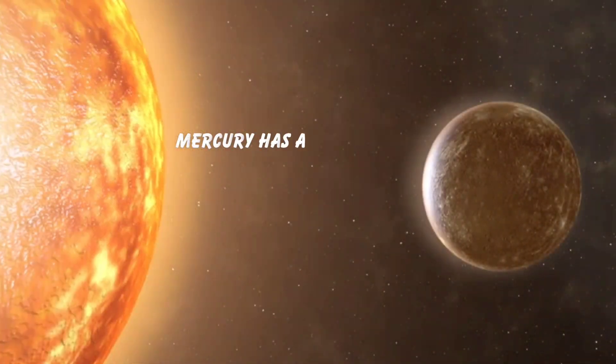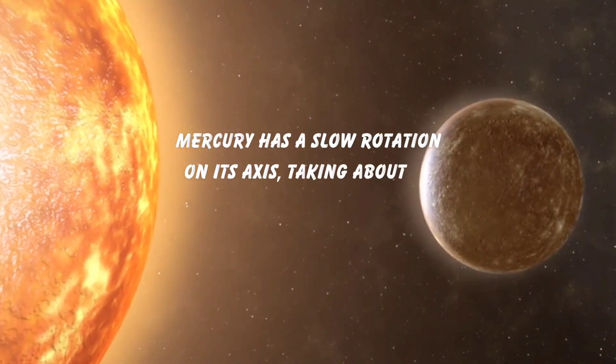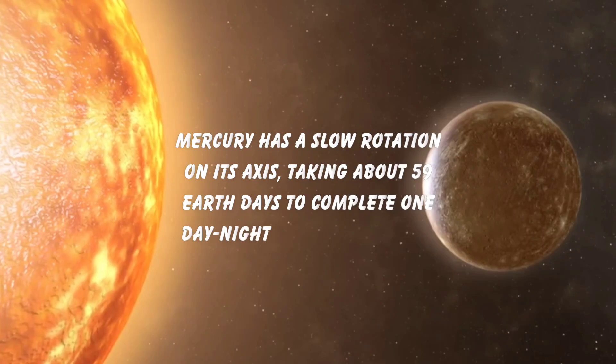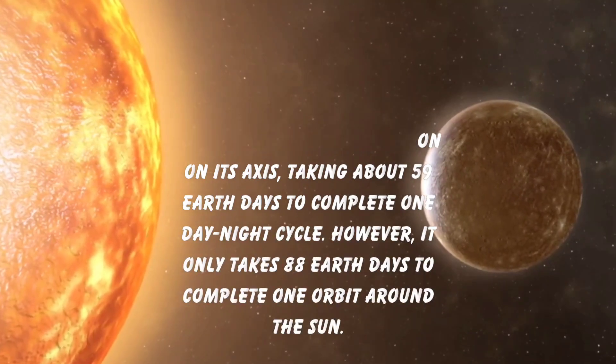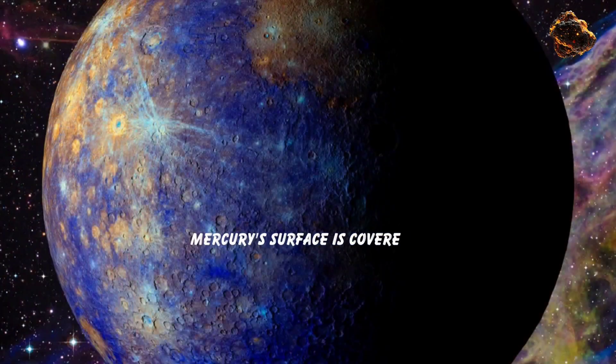Mercury has a slow rotation on its axis, taking about 59 Earth days to complete one day-night cycle. However, it only takes 88 Earth days to complete one orbit around the sun.